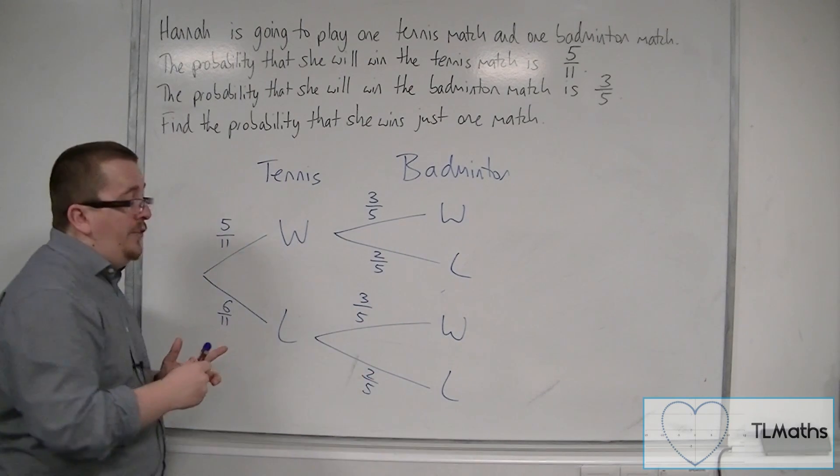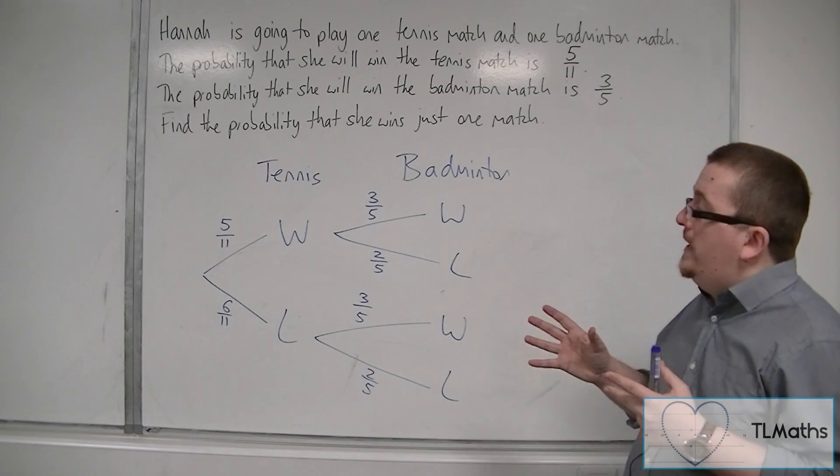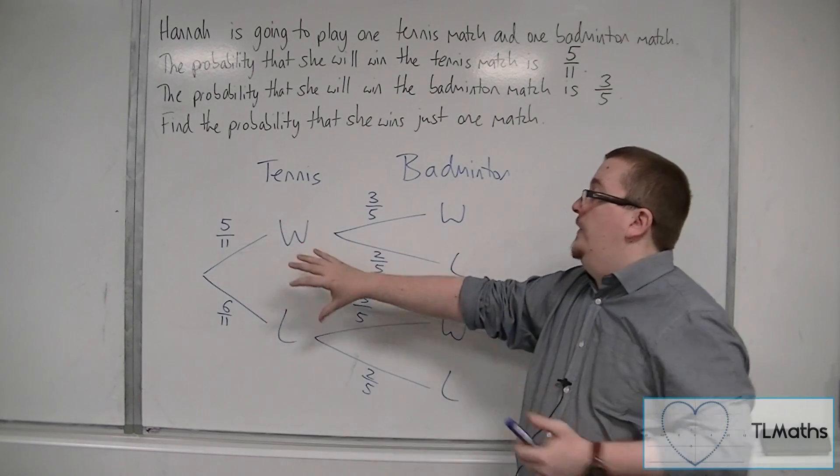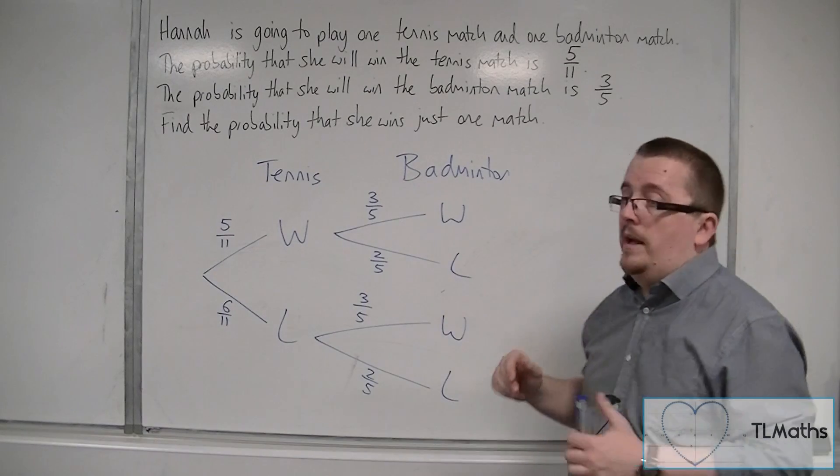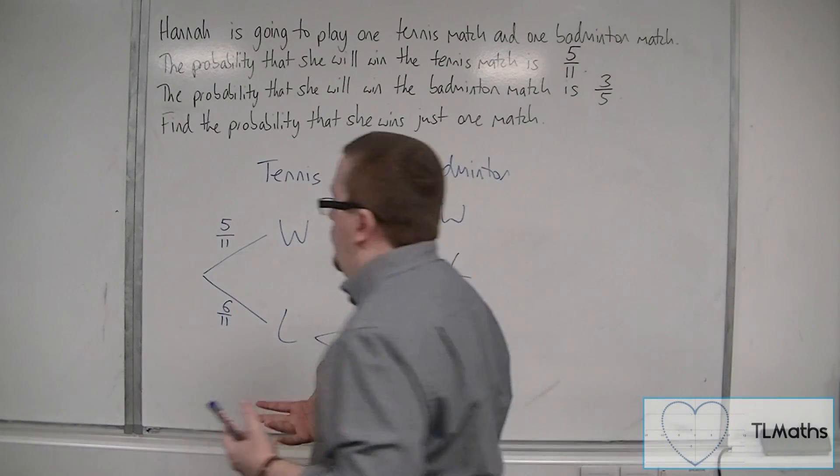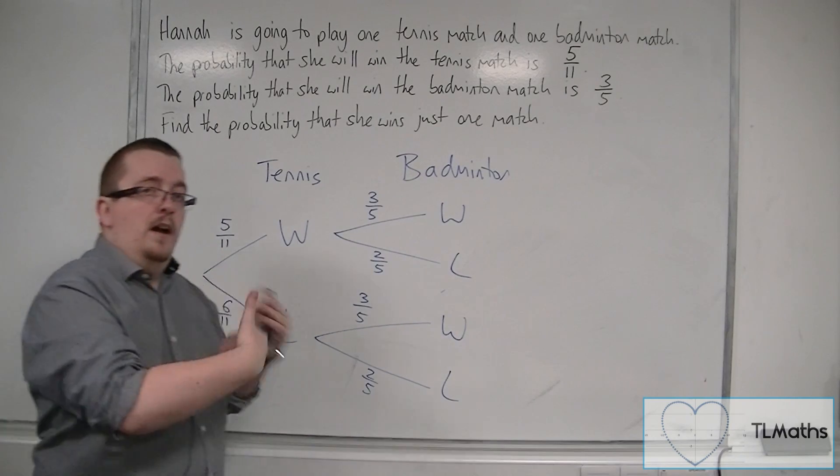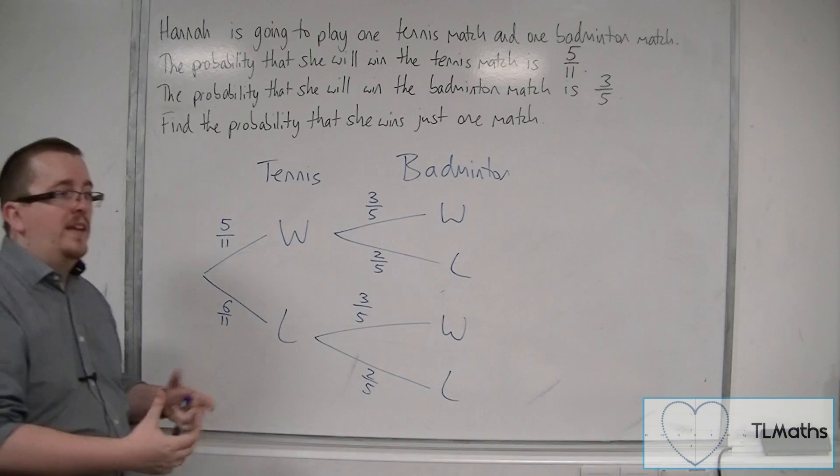This is a situation where we're clearly showing that winning or losing the tennis match is not affecting her performance in the badminton match. You might think that if someone has won the tennis match, that might affect how they perform in the badminton match, but this question doesn't take account of that.